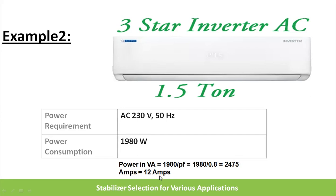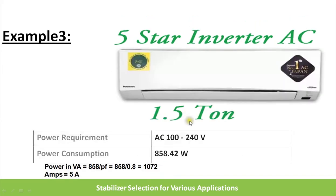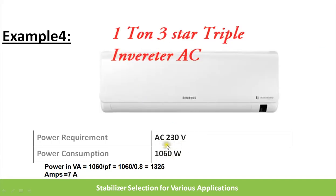Example 3: an AC with a power consumption of 858 watts gives approximately 1072 VA; dividing by 200V gives 5 amps, so a 5-amp stabilizer can be selected. Example 4: a load with 1060 watts gives approximately 1325 VA, resulting in 7 amps, so a 7-amp capacity stabilizer needs to be selected.